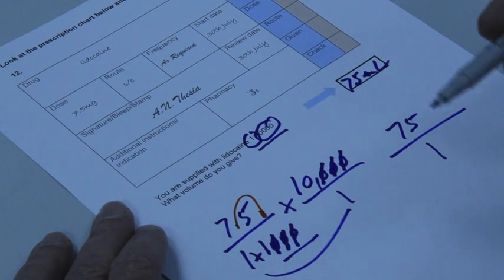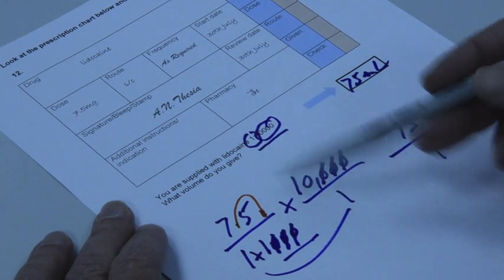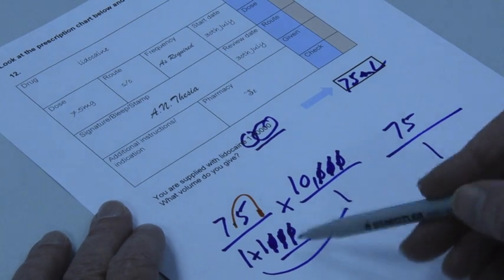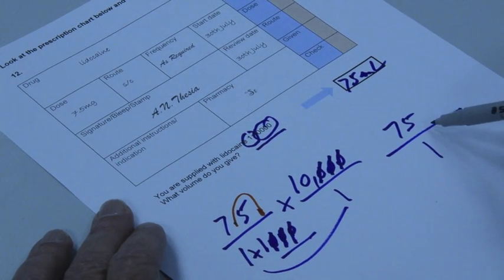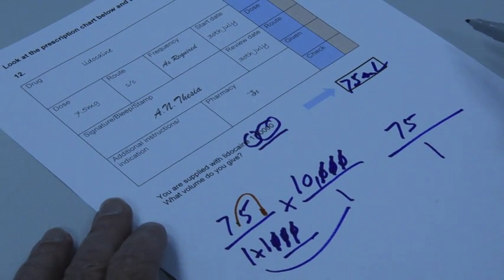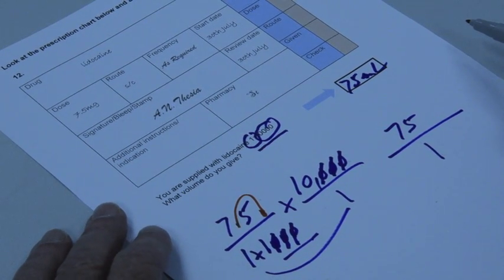We need grams and grams, oranges and oranges, and you'll find that cancels out quite easily, giving us our answer of 75 mils. Good luck.